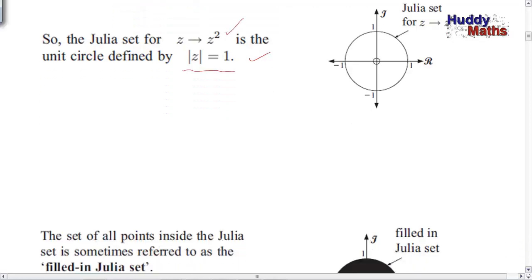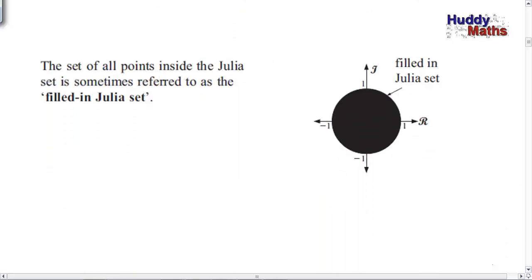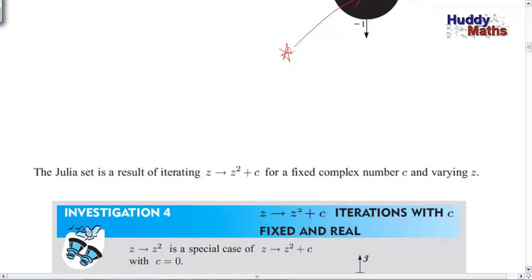Let's develop it a bit now. What about a filled-in Julia set? What about all the points that don't diverge outside the unit circle? Let's look at the points that all converge. They all lie in the filled-in Julia set. The ones that converge have modulus of z less than one, and all those points are going to be drawn inwards. That's called the filled-in Julia set.